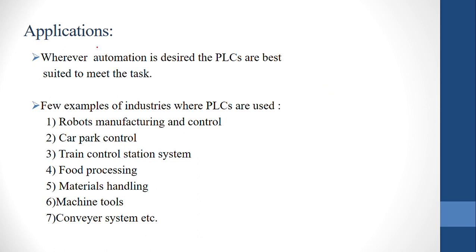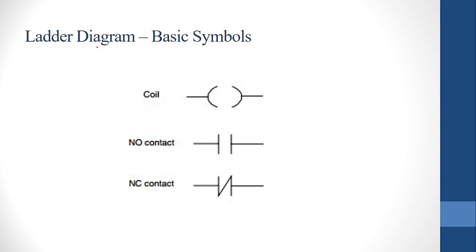Let's talk about the applications of PLC. You can use it in industry, food factories, and for human interaction. For example, applications include robotics, car park control, train control, food processing plants, material handling, CNC machines, and conveyor systems. PLC is used widely with computers and machines in industry.